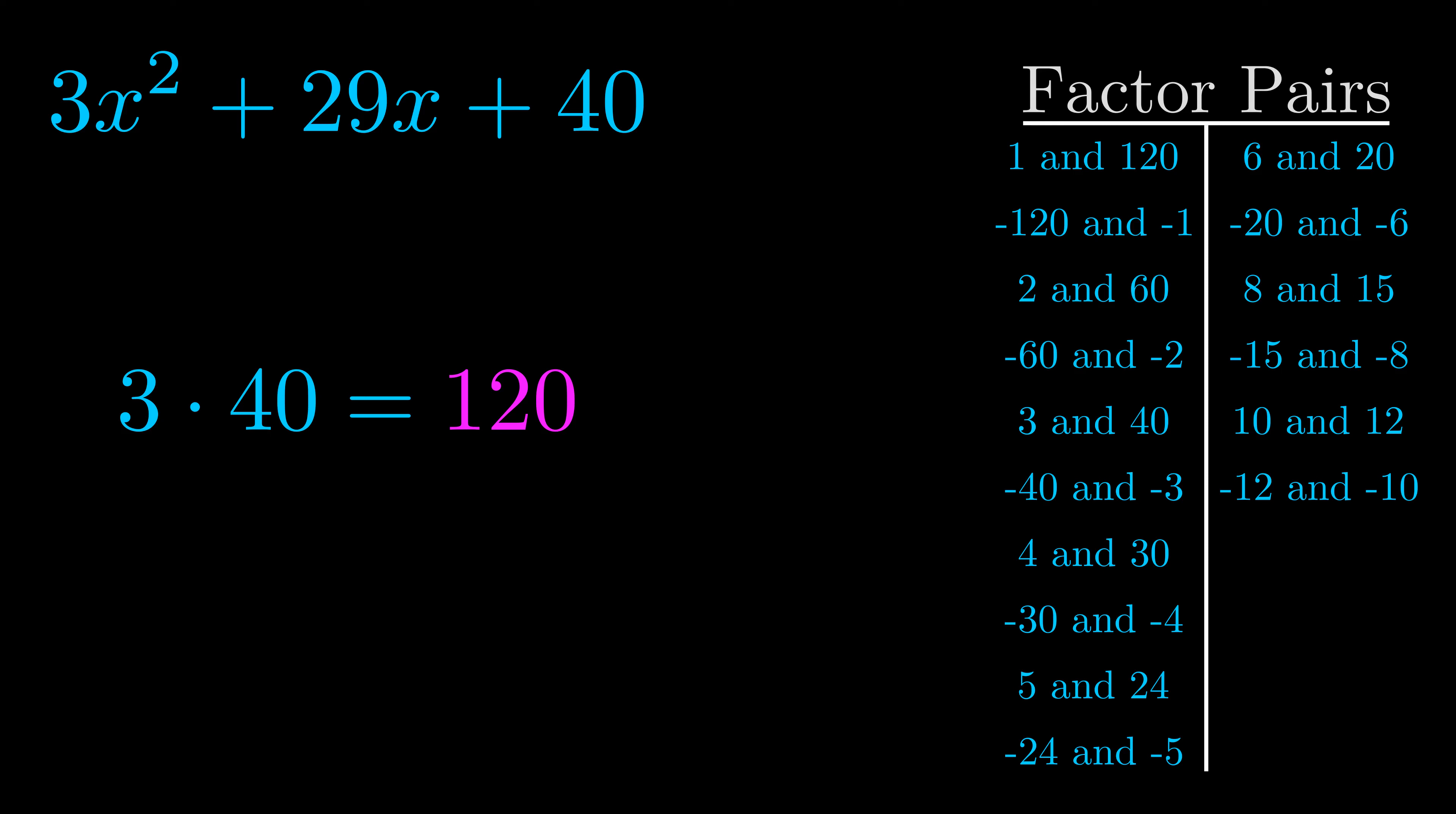The b value is the coefficient on the x term. That's the middle term, the one that we haven't done anything with yet. And really this is the only factor pair that we need.